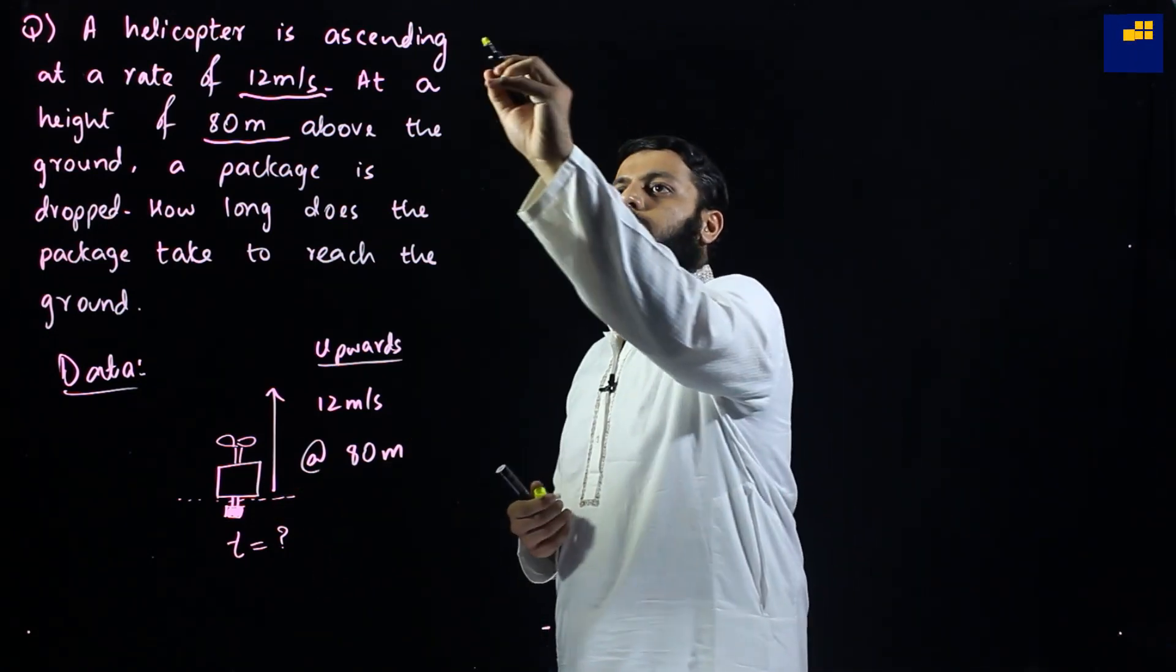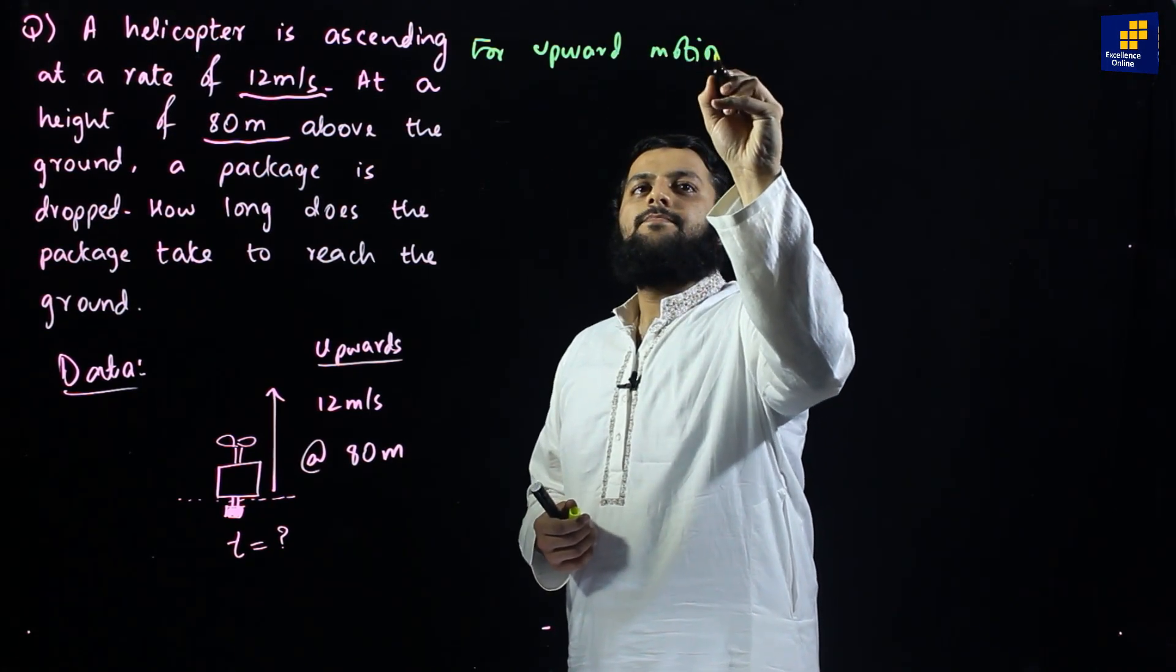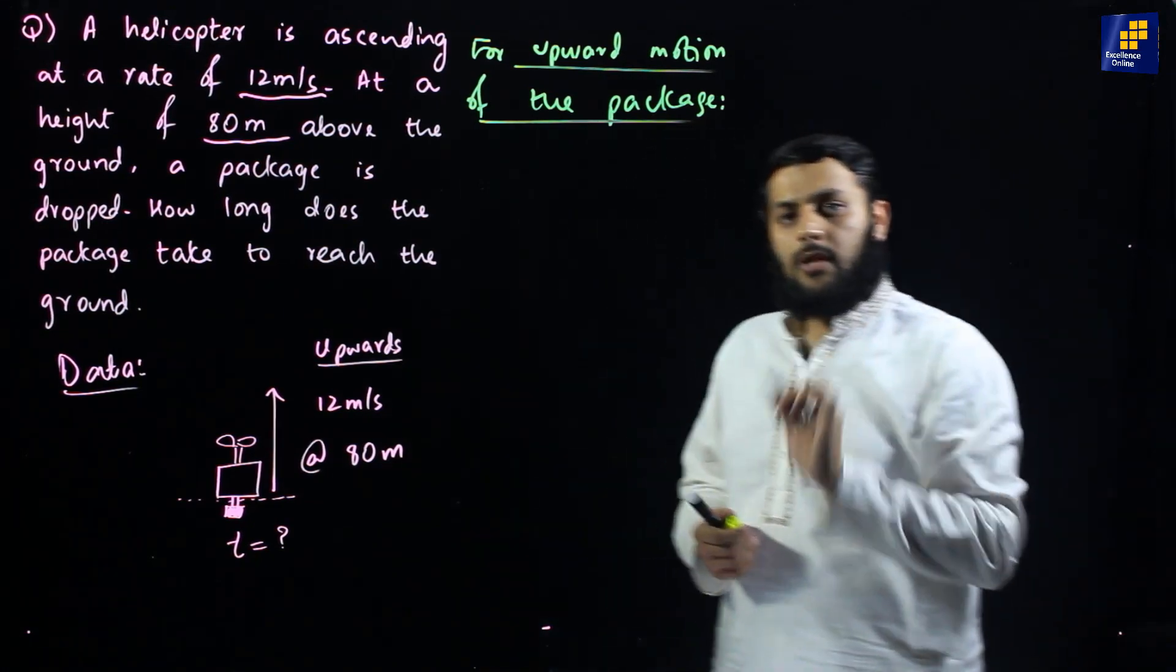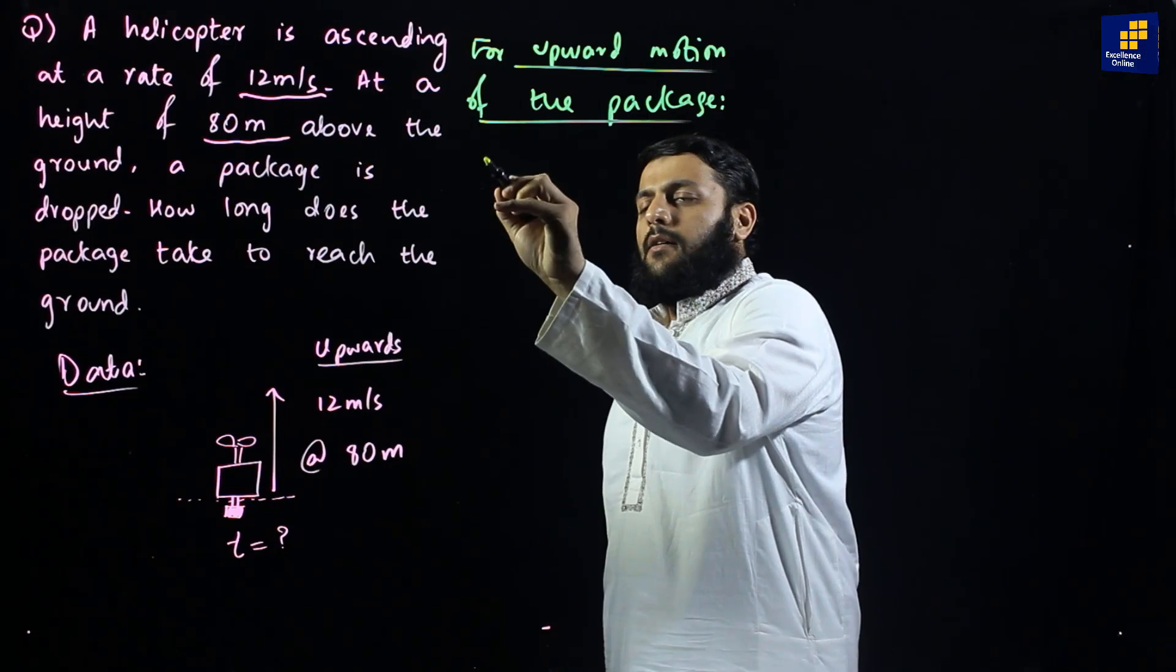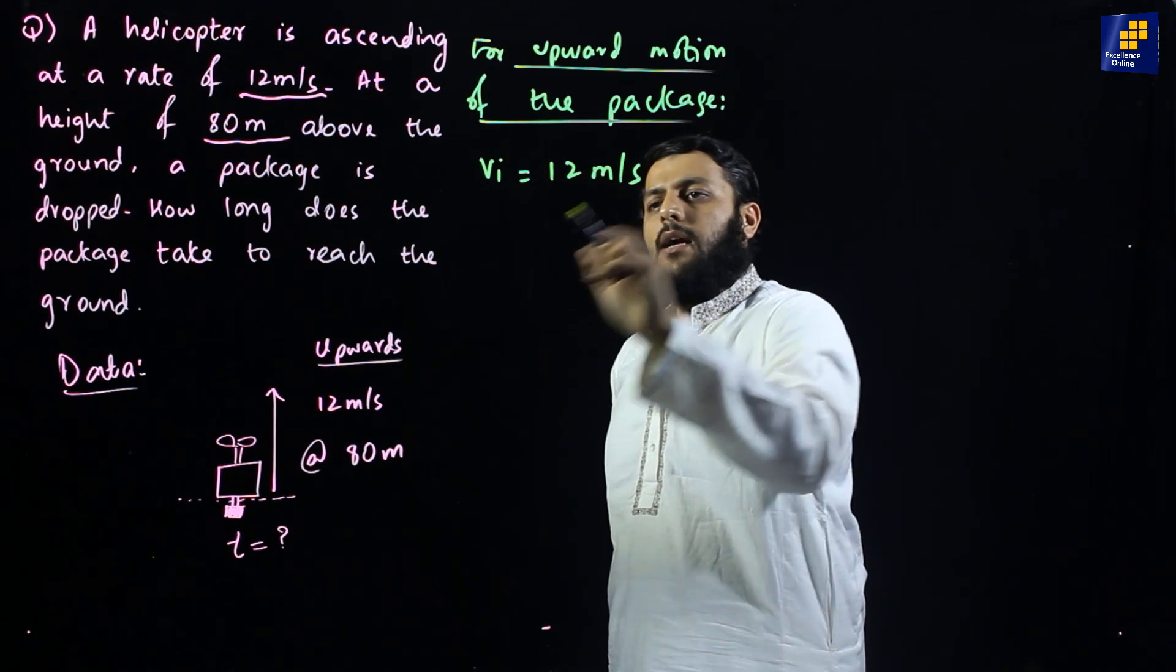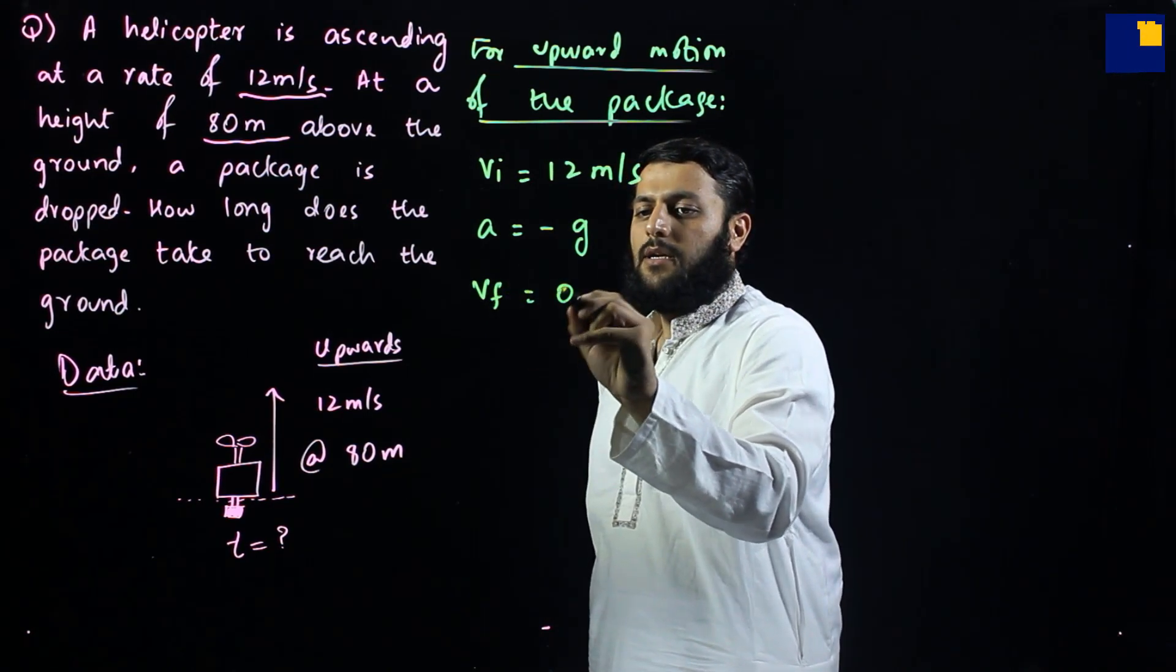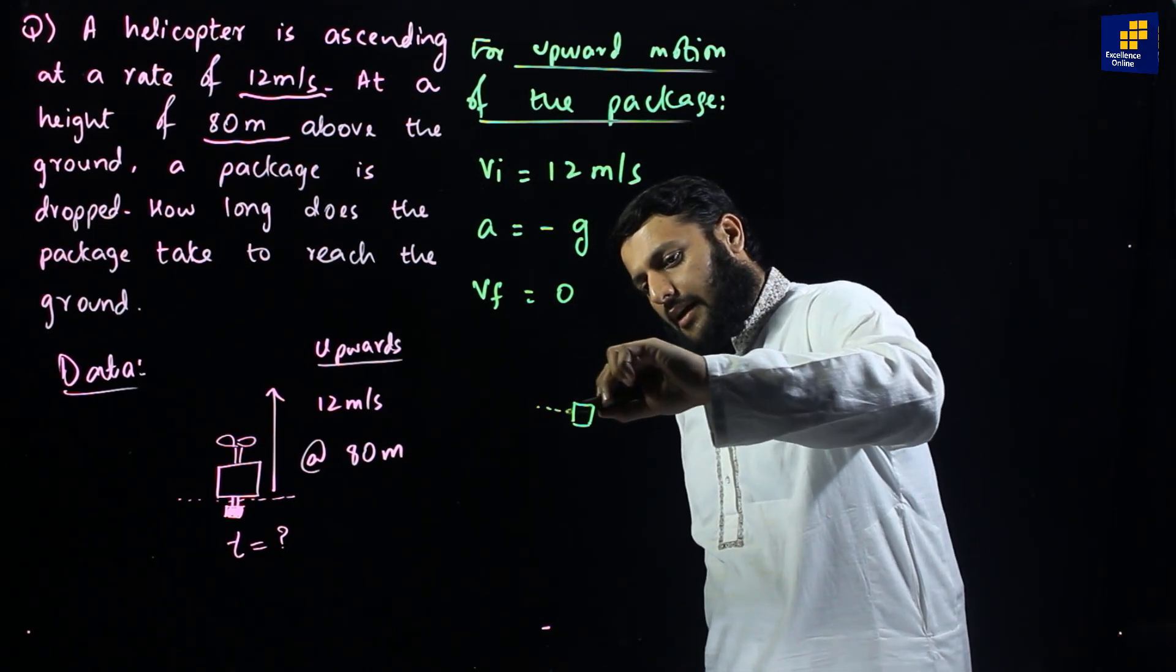The idea behind it is, as far as helicopter is carrying this package, since helicopter goes up, this package goes up. That means, for upward motion of the package, this needs to be clearly clear that I am only considering, only bothered about this package. So, what we can say is, initial velocity is 12 meters per second. Since it is going upwards, by the definition of upward motion, acceleration equals negative g. Final velocity must be zero.